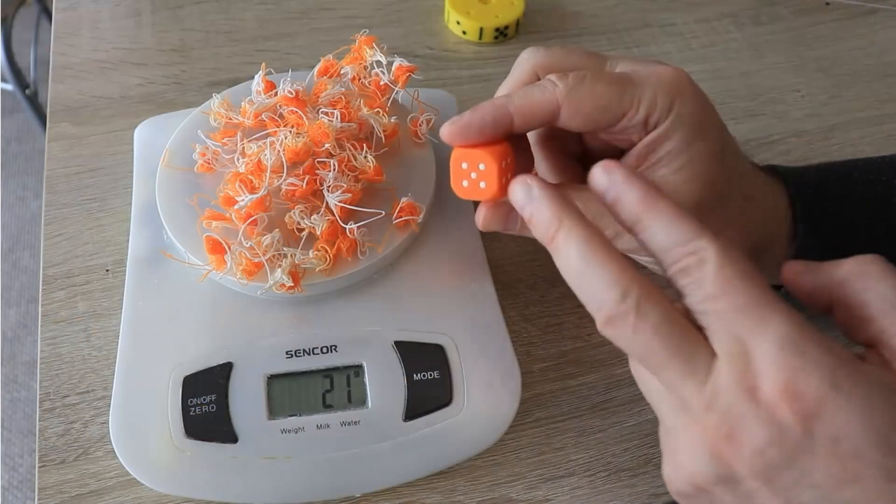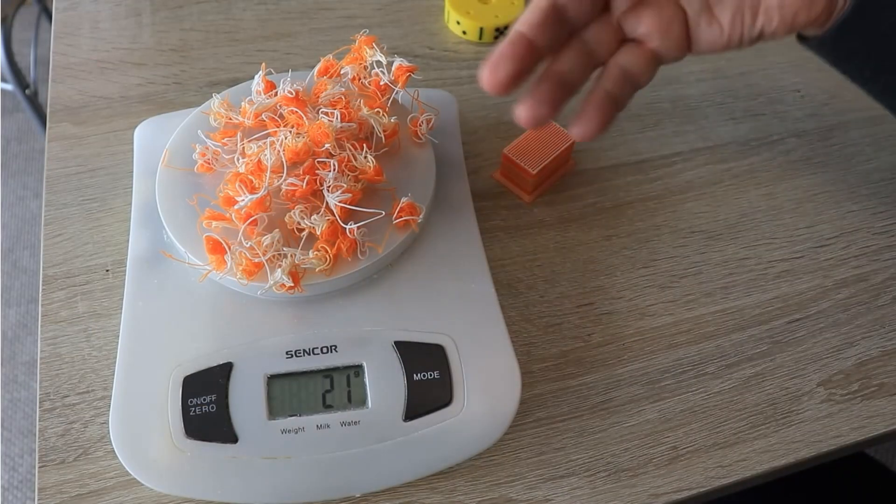Now I have BambuLab AMS, and it is fantastic and works great, but there I have a lot of purge and waste material, and that color changing time, I mean one and a half minutes per layer, that's a little bit too much.